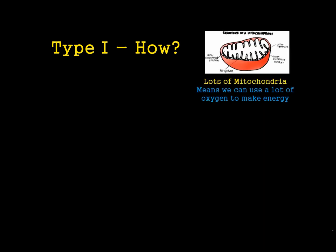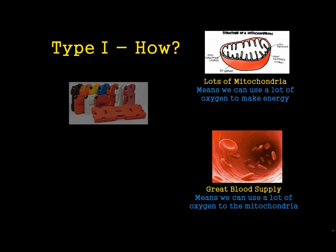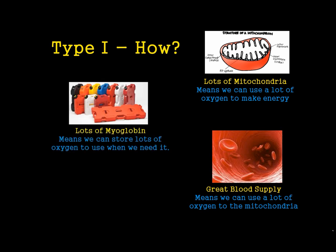It's also important to understand what's inside the muscle fibre. Because Type 1 muscle fibres use mitochondria, they have a lot of it, which means we can utilise a lot of oxygen to make our energy. We also have a great blood supply to these muscle fibres, so they're always getting a supply of oxygen to turn into energy. There are also great reserves of myoglobin — great reserves of oxygen — so if we can't get enough oxygen in, we do have reserve supplies that we can use to turn oxygen and fat into energy.